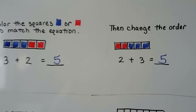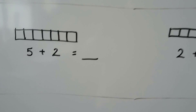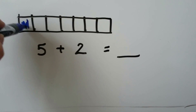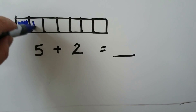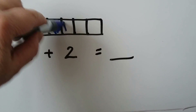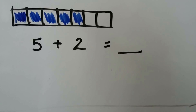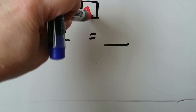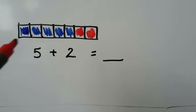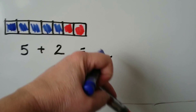It doesn't matter what order the addends are in. 5 plus 2 — if we have five blue ones and then two red ones, how many squares are colored in? 1, 2, 3, 4, 5, 6, 7. We have 7.